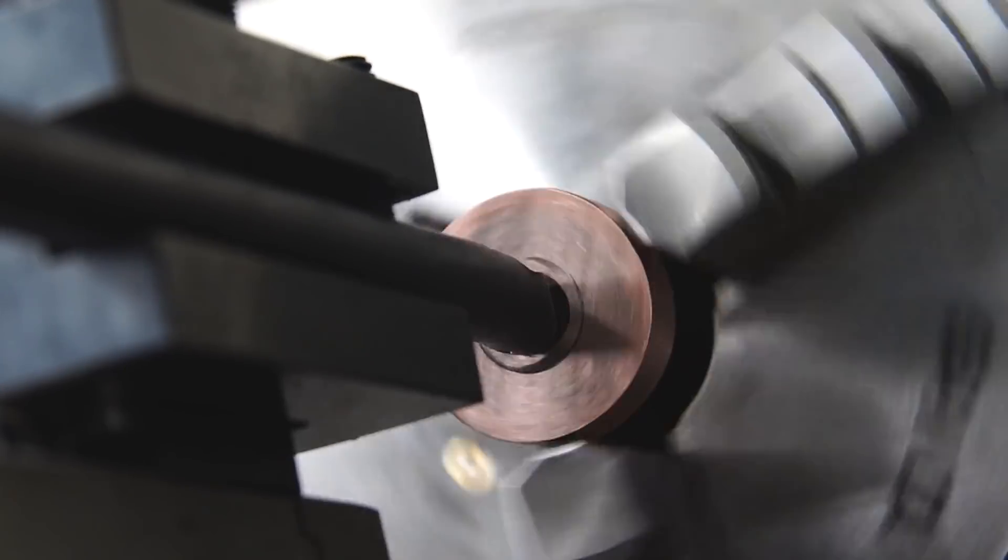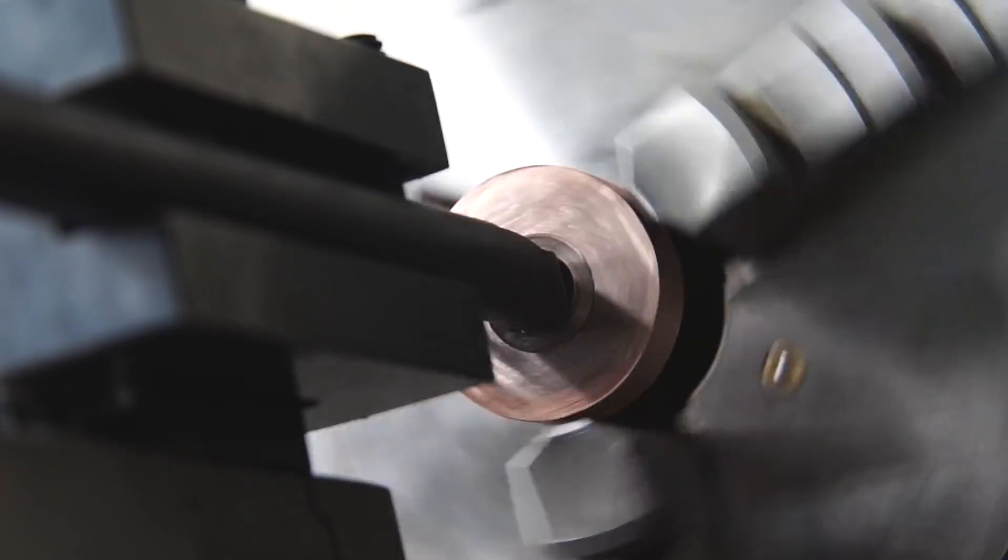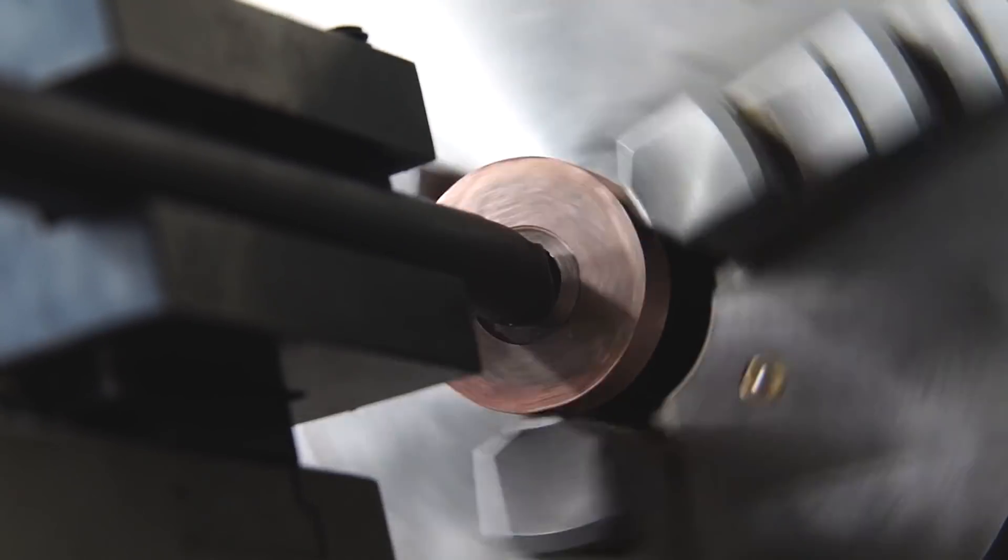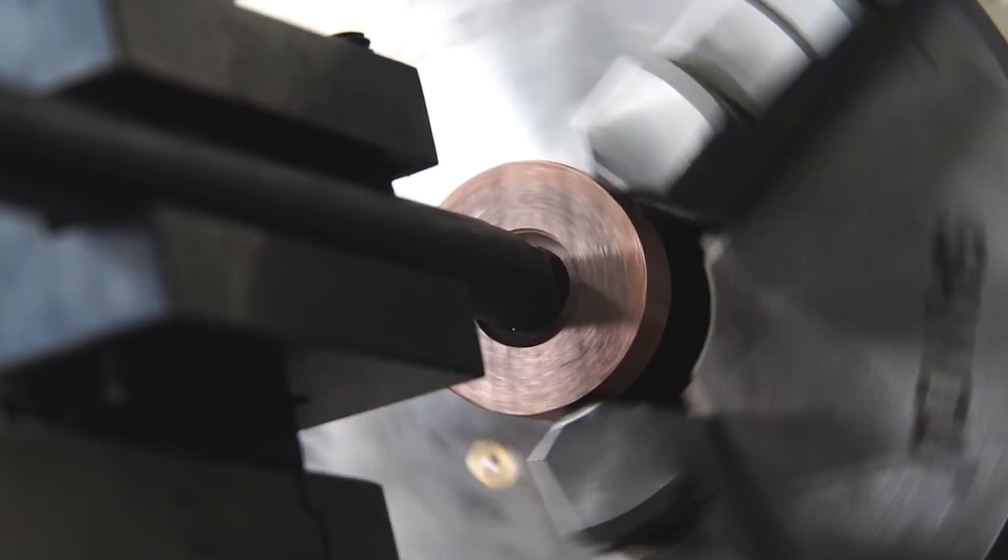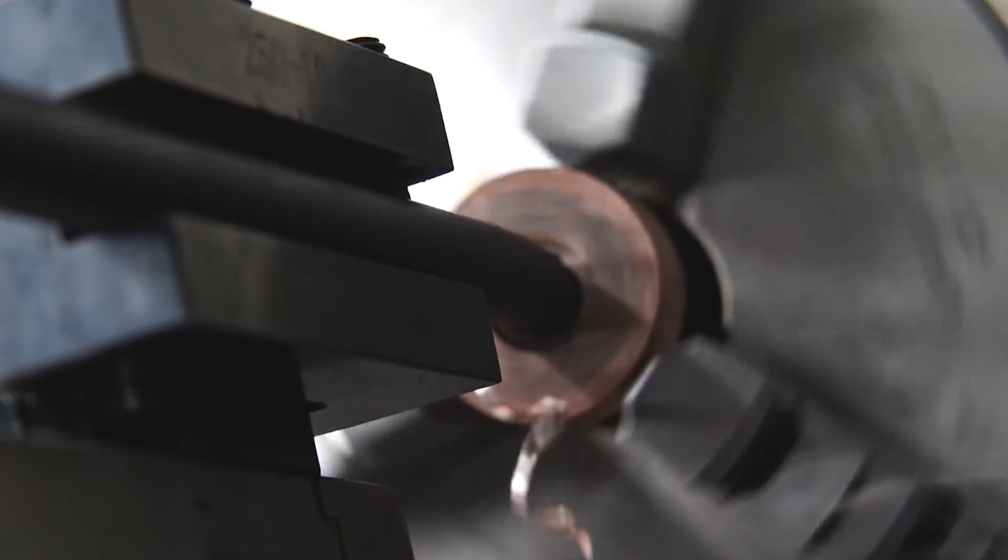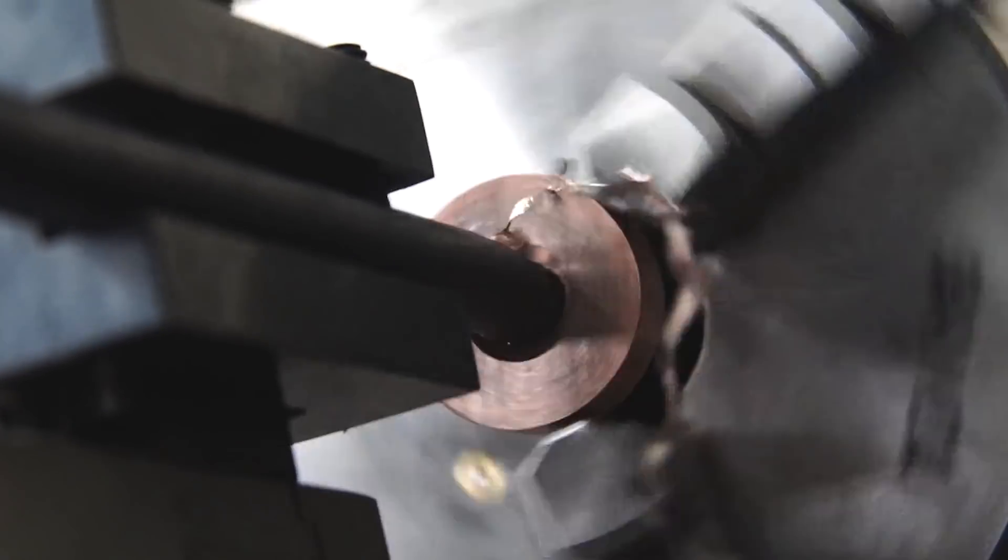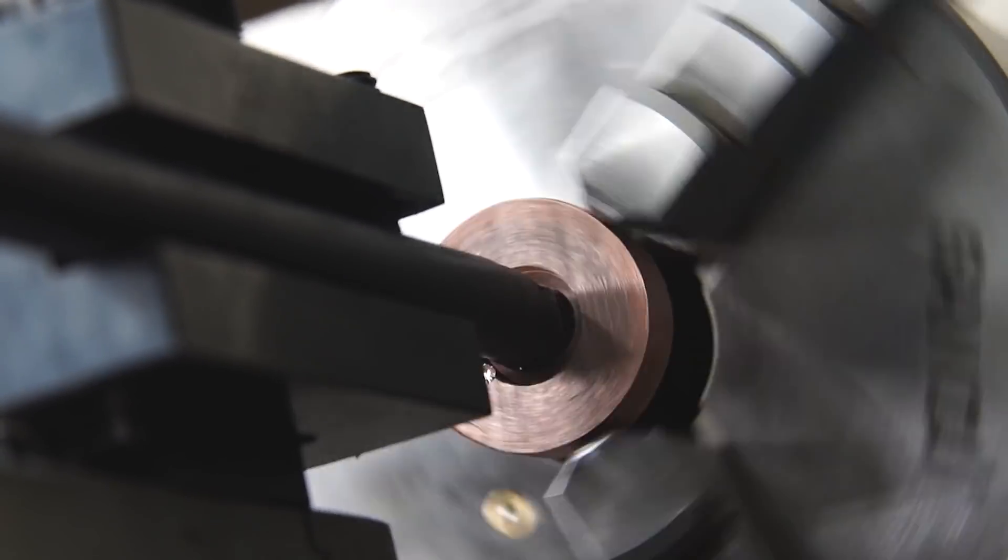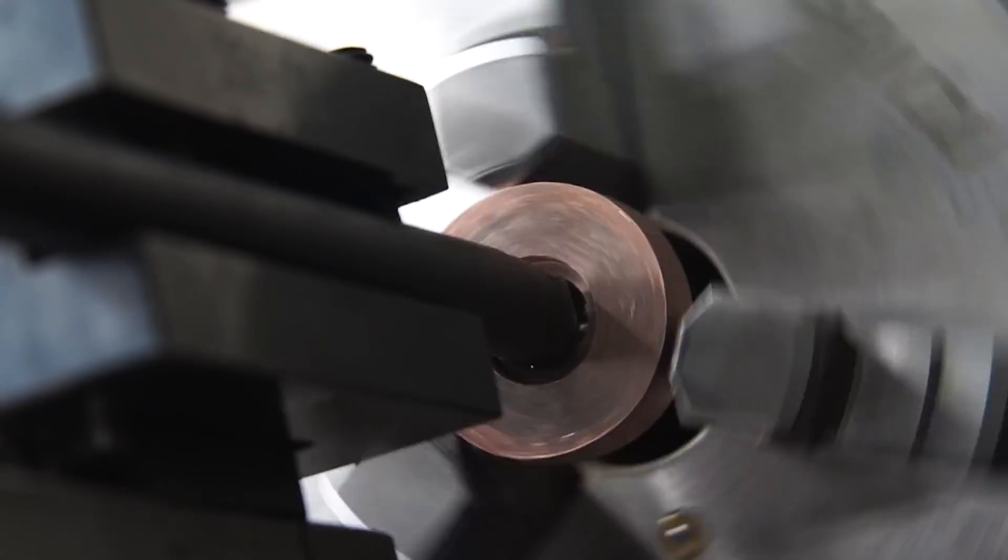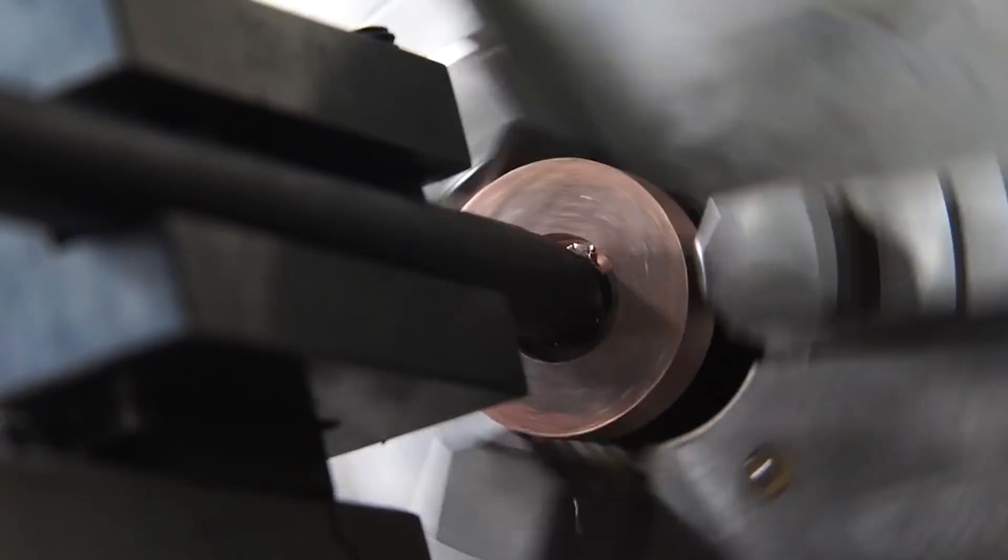That'll give me plenty of room for all the sanding and finishing that we'll do later. While I'm doing all this boring I'm being really careful to make sure I'm getting nice and clean cuts. I'm using a very sharp lathe bit because if you're not careful, superconductor can smear. That's because it's made of two different materials, so you got to make sure you're using all of the right equipment.